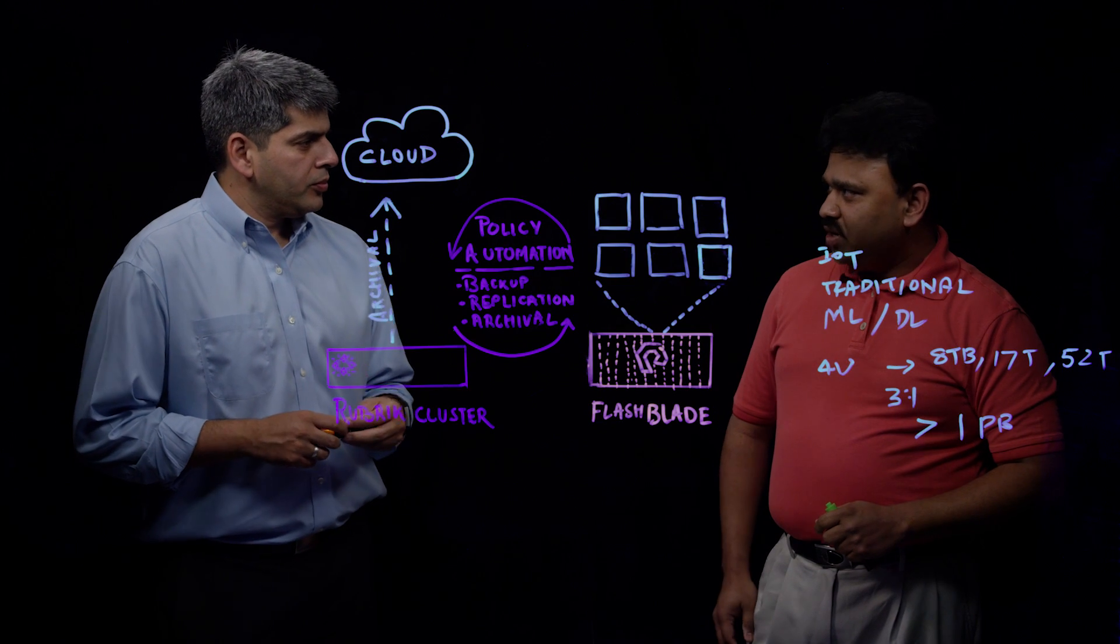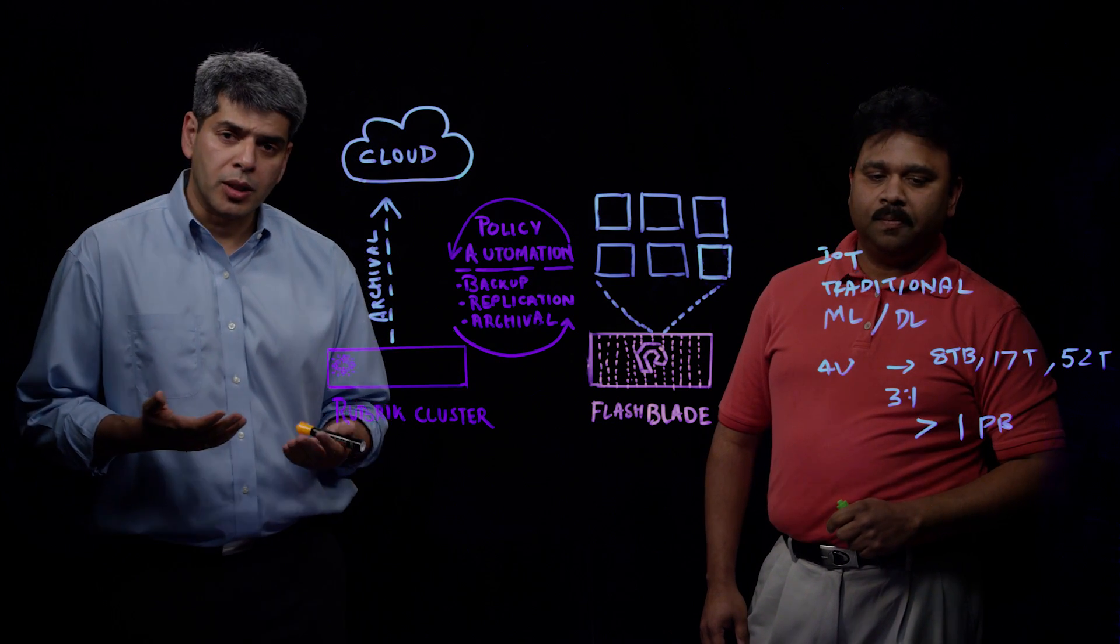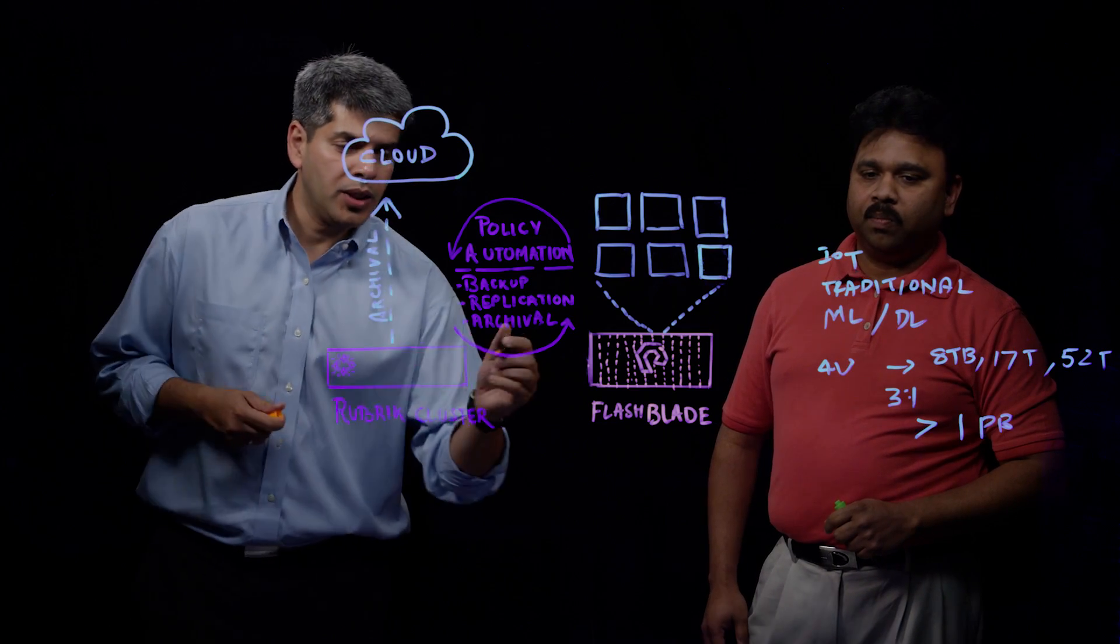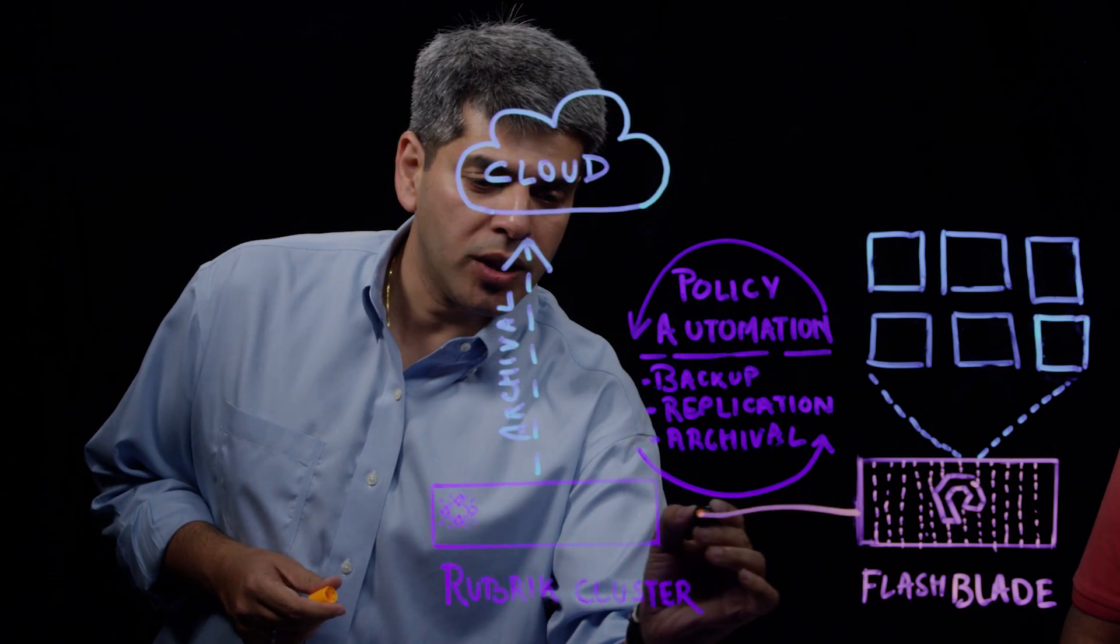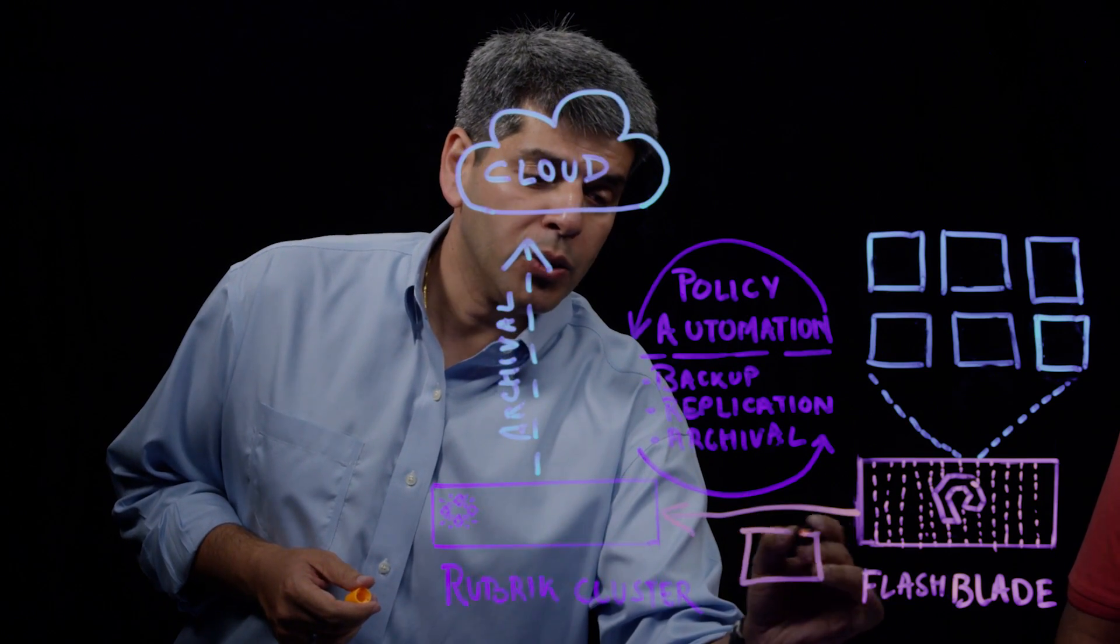Nitin, can you just introduce your product? Sure, yeah. So Rubric has developed a native NAS protection capability. What it does is it creates a NAS share directly mounted from Flash Blade onto Rubric cluster. So once it's mounted, Rubric can do a full file granular backup.